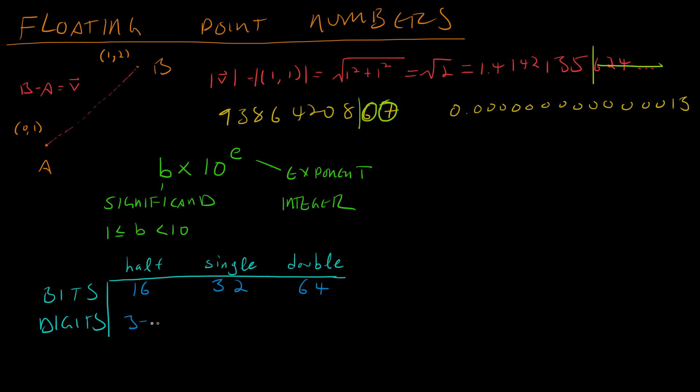For half precision, you get between three and four digits in decimal. So you would have to cut it off about here. For single precision, you get between seven and eight digits. And for double precision, you get about 15 or 16 digits of precision. Again, in decimal.